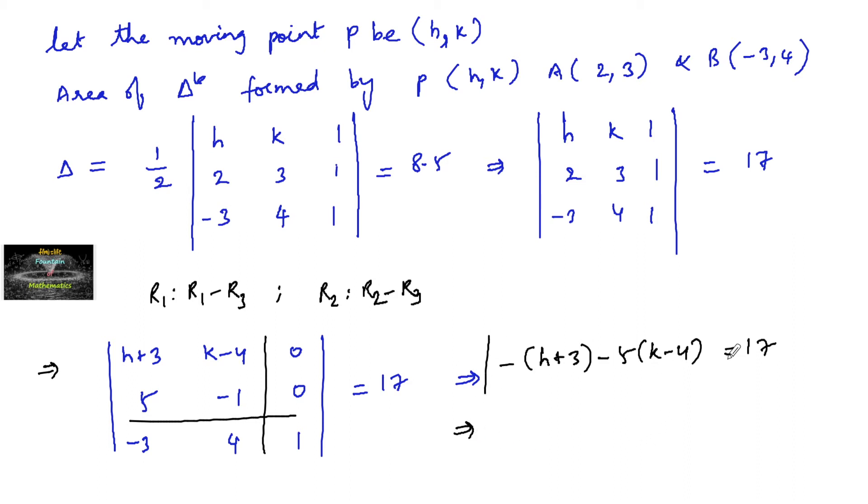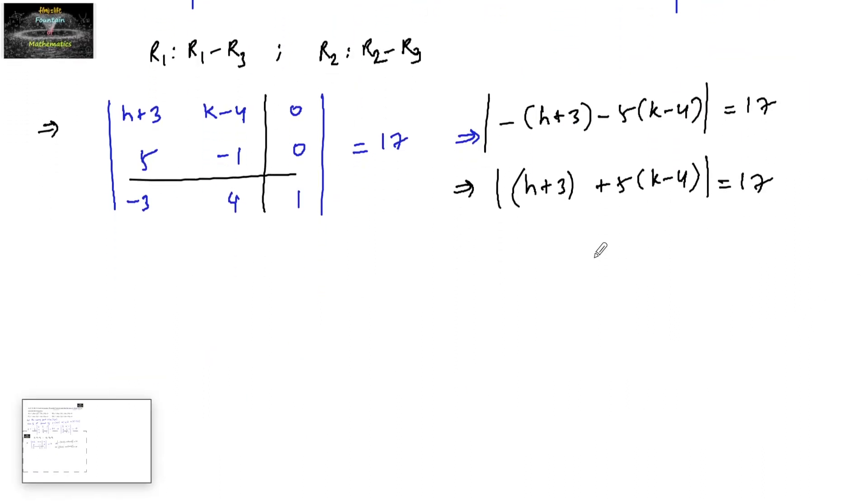Or mod, let me take in mod. So we can write it as H plus 3, plus 5 times of K minus 4, is equal to 17. Because under the mod, I can take. The next, H plus 3, plus 5K minus 20, is equal to plus or minus 17. Removing the mod. Plus or minus 17.